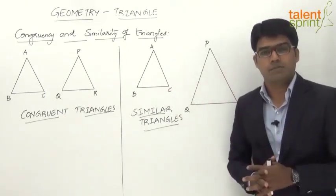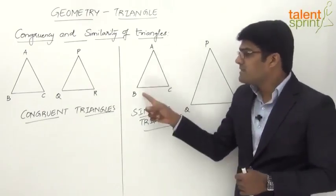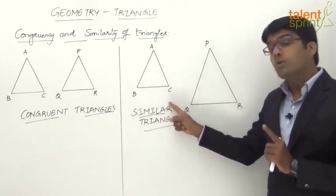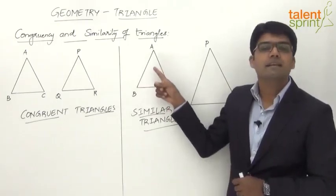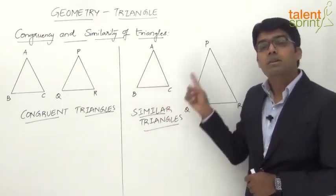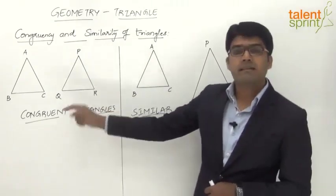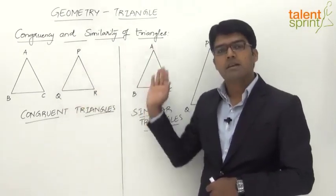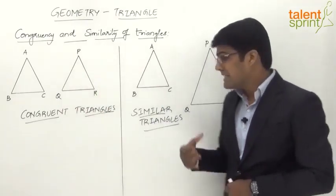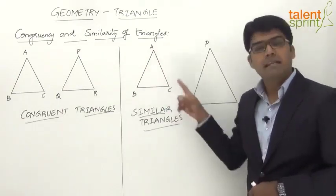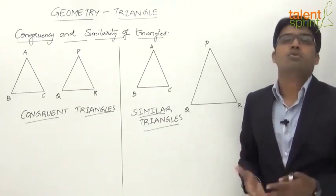If we superimpose one similar triangle on the other, they will not coincide. The three angles of triangle ABC will be equal to the three corresponding angles of triangle PQR, but the three sides will not be equal to the corresponding sides. In congruent triangles both angles and sides are equal, but in similar triangles the angles are equal while the sides are not equal — they are proportional.